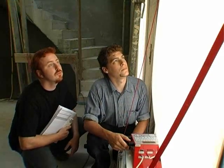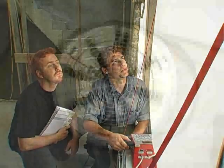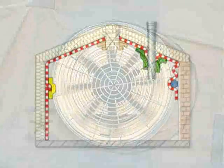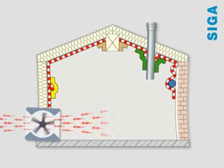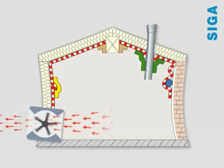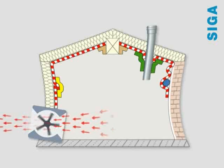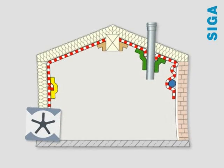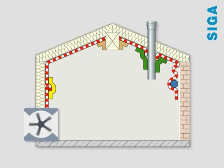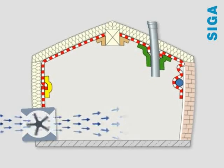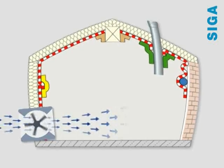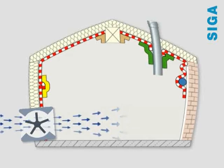Negative pressure builds up inside the structure and the membrane at the measuring apparatus bulges inwards. The fan blows the indoor air out of the structure to produce a negative pressure of 50 pascal in the interior. It then pumps outdoor air into the structure to produce a positive pressure of 50 pascal in the interior, which corresponds approximately to gale force 5.